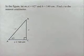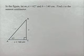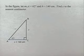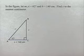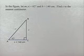Here's another problem dealing with trig ratios. In the figure, let the measure of angle A equal 62 degrees and the side labeled B equal 140 centimeters. Find C to the nearest centimeter.